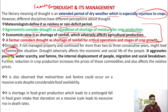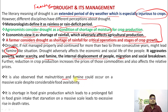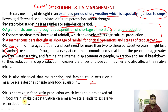Drought aggravates poverty, water scarcity, famine, internal displacement of people, migration, and social breakdown. In India, extended drought periods have been observed to lead to farmer suicides due to production failure. Malnutrition and famine could occur at a larger scale. Drought is linked to food security — shortage in food grain production leads to prolonged fall in food grain and massive increase in death rates, connecting the hunger index and food security to drought situations.